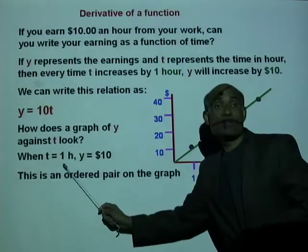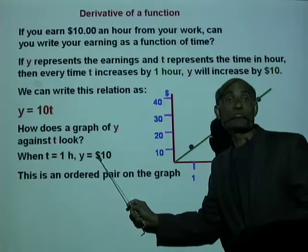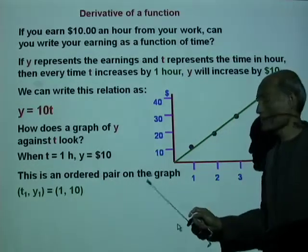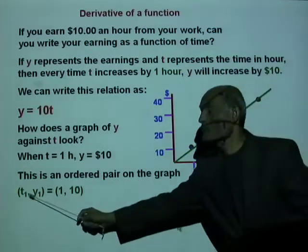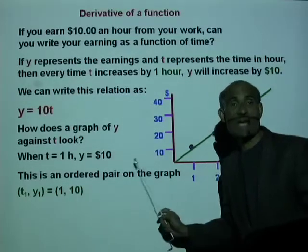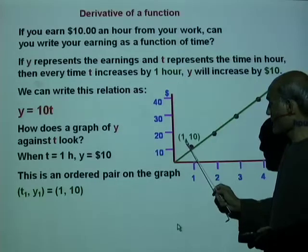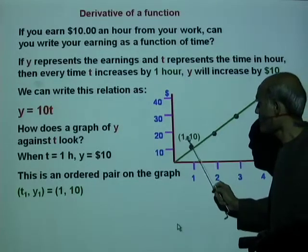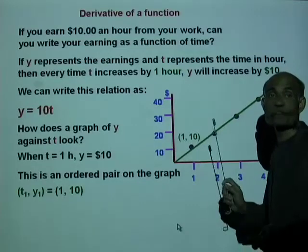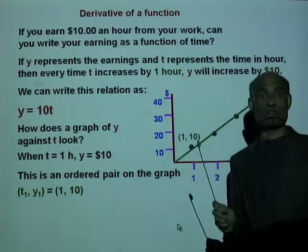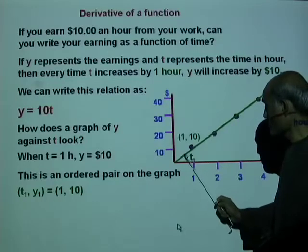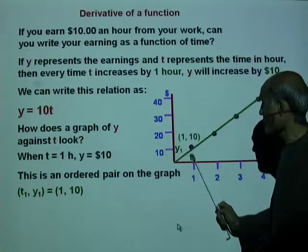When t equals one hour, y equals ten dollars — that is actually an ordered pair. We would say t1, y1 equals (1, 10). Let's mark that ordered pair here. This is t1 equal to one hour, and this is y1.